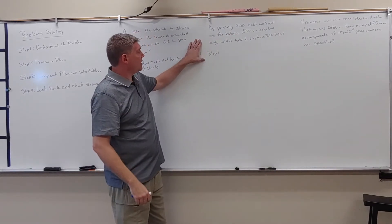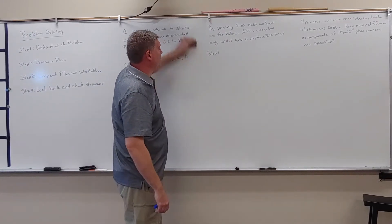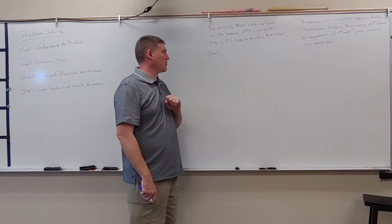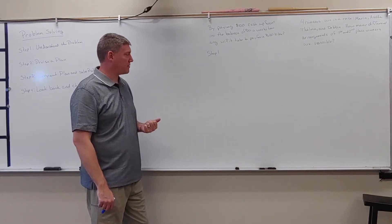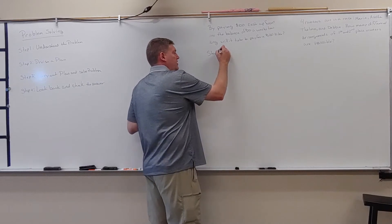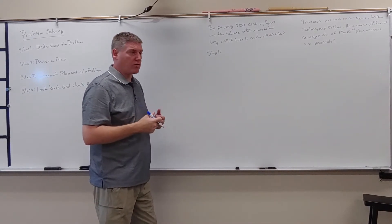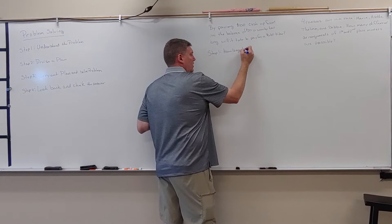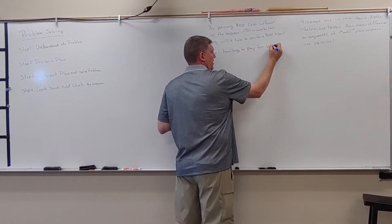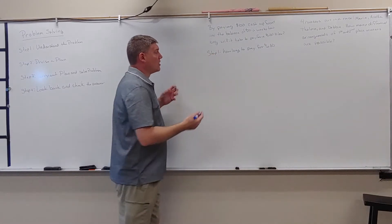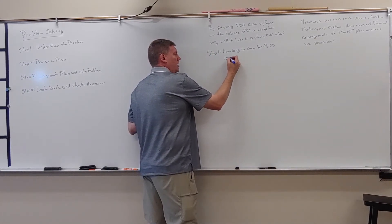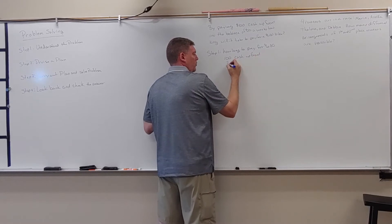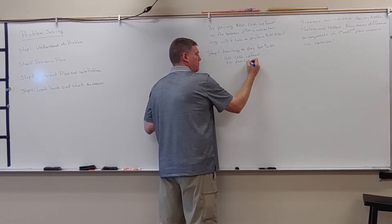Now, the next one here is we're going to work through all four steps. So it says by paying $100 cash up front and the balance of $20 a week, how long will it take to pay for a $680 bike? So we have to understand the problem. Step one. Well, what is the process? It says basically we're looking at how long to pay for $680. So what other information do we have? We have $100 cash up front and then $20 per week.